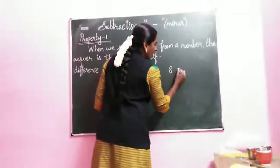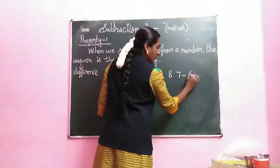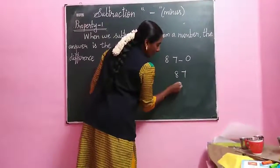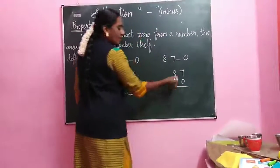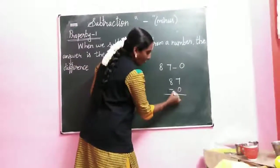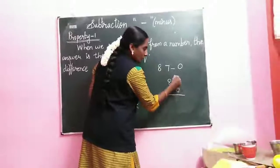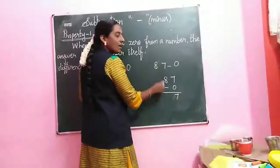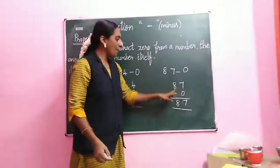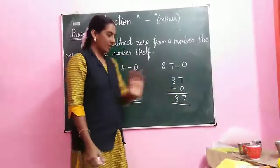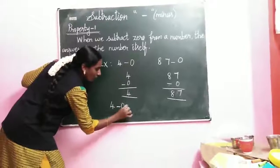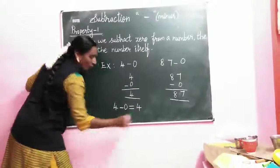Another example: 87 minus 0. Do the column method. 7 minus 0 — using the property, answer is the number itself, so 7. For the tens place, there is no number below, so write it down. 87 minus 0 equals 87. So 4 minus 0 equals 4.